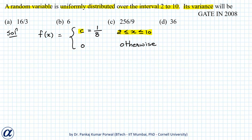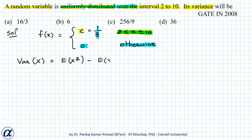So the PDF of our uniformly distributed random variable has value 1/8 when x lies in the interval 2 ≤ x ≤ 10, and 0 otherwise. Now, the variance of a random variable can be written as the expected value of x squared minus the square of the expected value. So first I will find E[X].